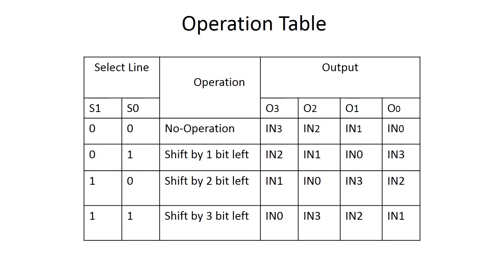Next, when the select line combination is 0,1 the first operation is shift by 1 bit left. Output O3 is connected with IN2, meaning IN2 is shifted to the left by 1 bit. Similarly IN1 is shifted by 1 bit, IN0 is shifted by 1 bit, and IN3 is also shifted by 1 bit. When the combination is 1,0 we shift by 2 bits left, and when it is 1,1 we shift by 3 bits left. So this is the operation table of the 4-bit barrel shifter.